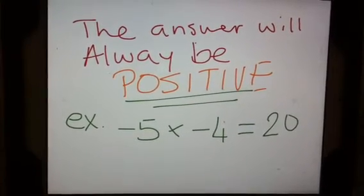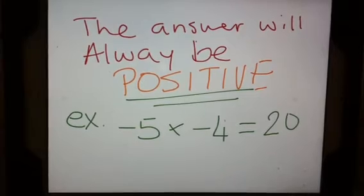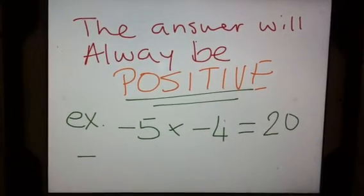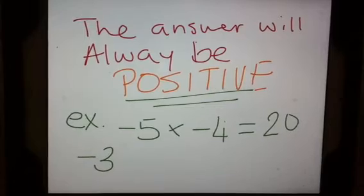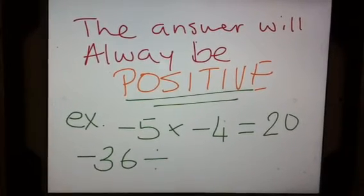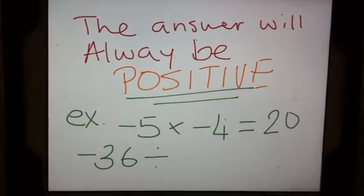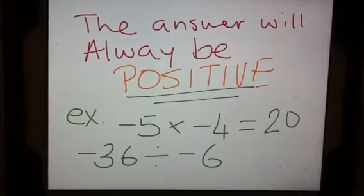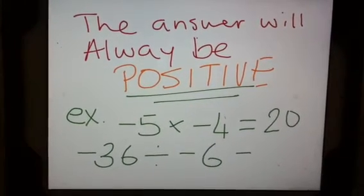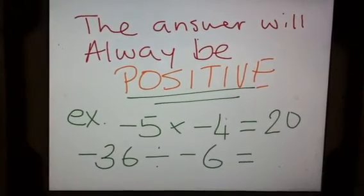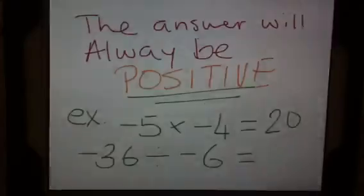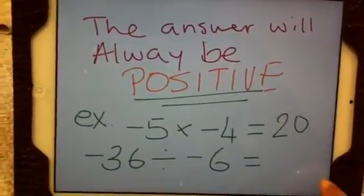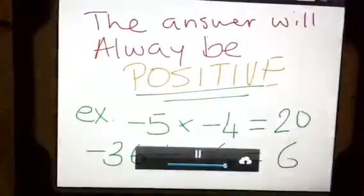Here's a division example in the same way. If I have negative 36 divided by negative 6, since they are both the same sign, I know it's going to be positive, so I don't need to put the sign in. And 36 divided by 6 is 6.